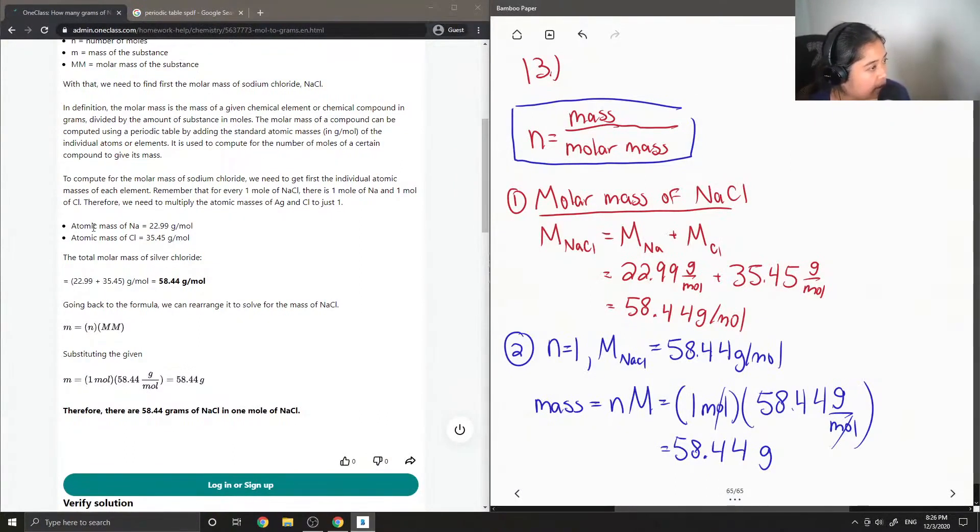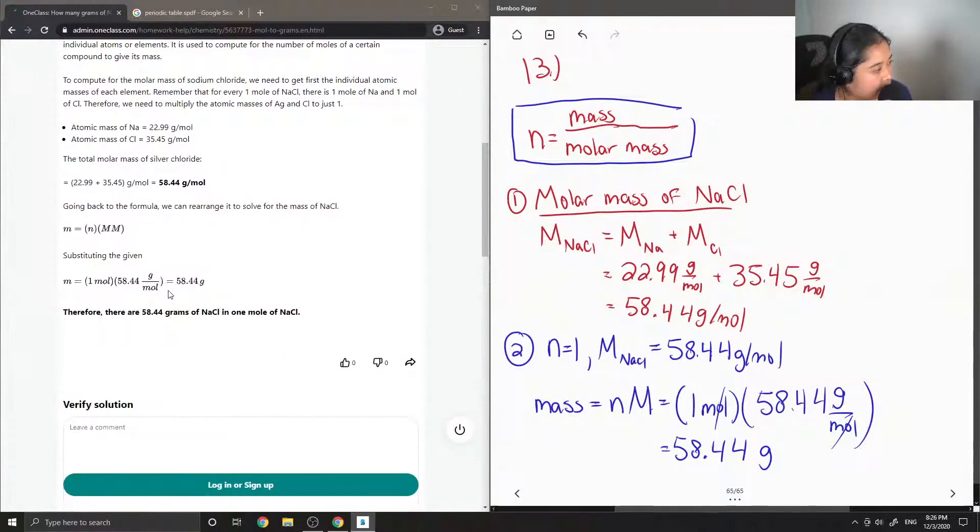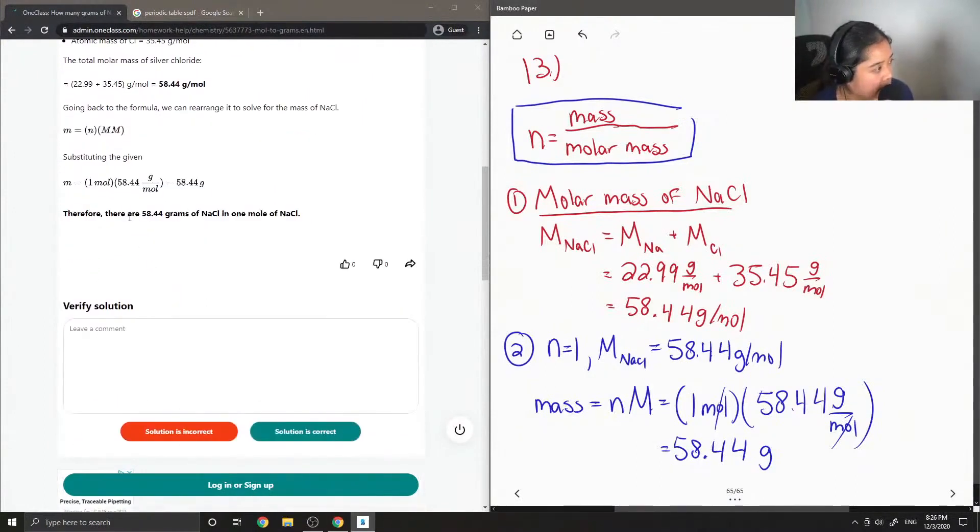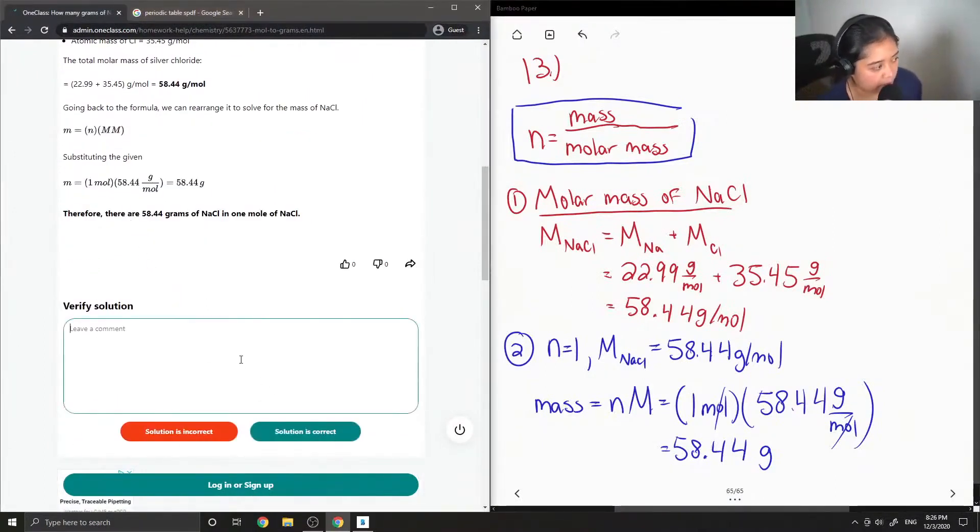1 mole of each. So atomic mass of sodium, 22.99, chlorine, 35.45, so they also got 58.44. And their final answer was also 58.44 grams of sodium chloride in 1 mole.